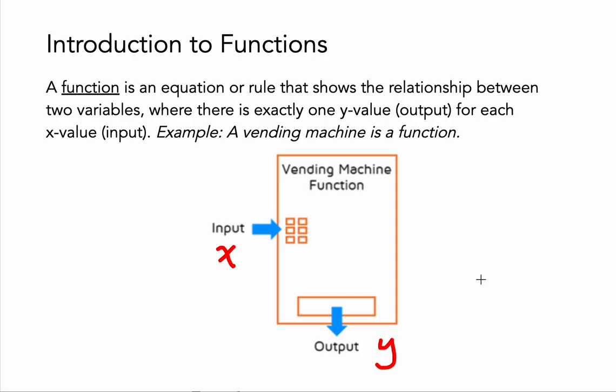And there should only be one y value, one output. A non-working or not-functional vending machine, well, maybe when you press Pepsi, sometimes you'll get a Pepsi, other times you'll get a water or a Sprite. So it has to be predictable. That's what makes a function good. It's got to be predictable, and it's got to have one output or y value.